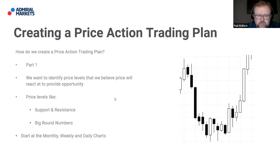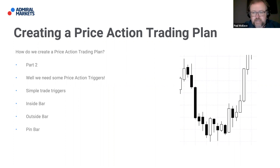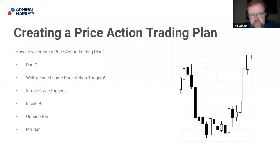Part one: look at monthly, weekly, and daily charts and identify price levels where you think there will be opportunity — something like support, resistance, or big round numbers. The second part: we need some price action triggers. If price is at a level where we're interested, we need a few price action triggers. We're going to talk about a few simple trade triggers: inside bars, outside bars, pin bars. There are more, and we may cover them in future sessions, but this is just about helping new traders create a very simple price action trading plan they can take away from today.